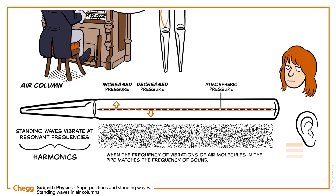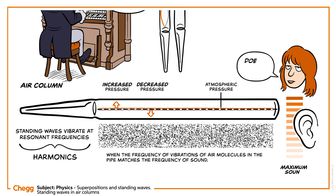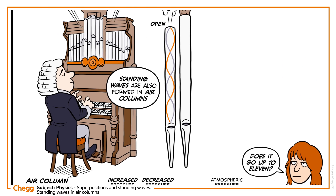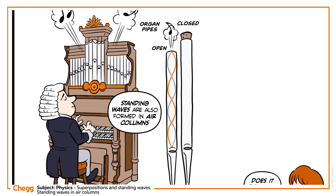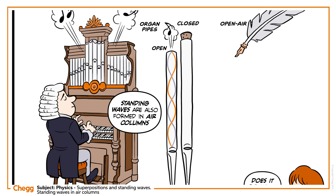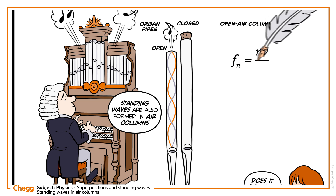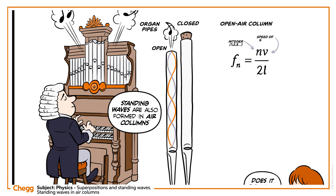During the occurrence of harmonics, we hear maximum sound. The nth harmonic frequency of air in an open air column is fn equals n times v divided by 2l, where n is the integer 1, 2, 3 and so on, v is the speed of sound, and l is the length of the air column.